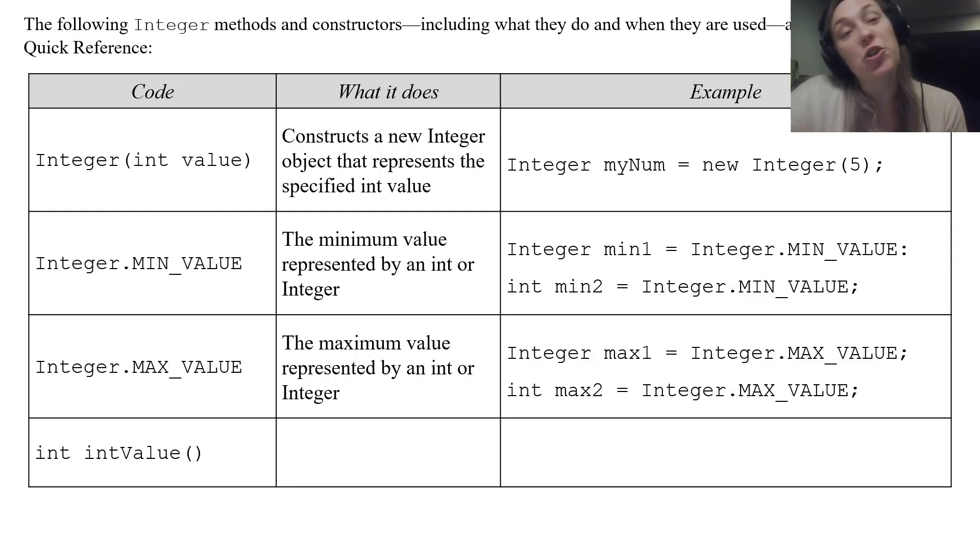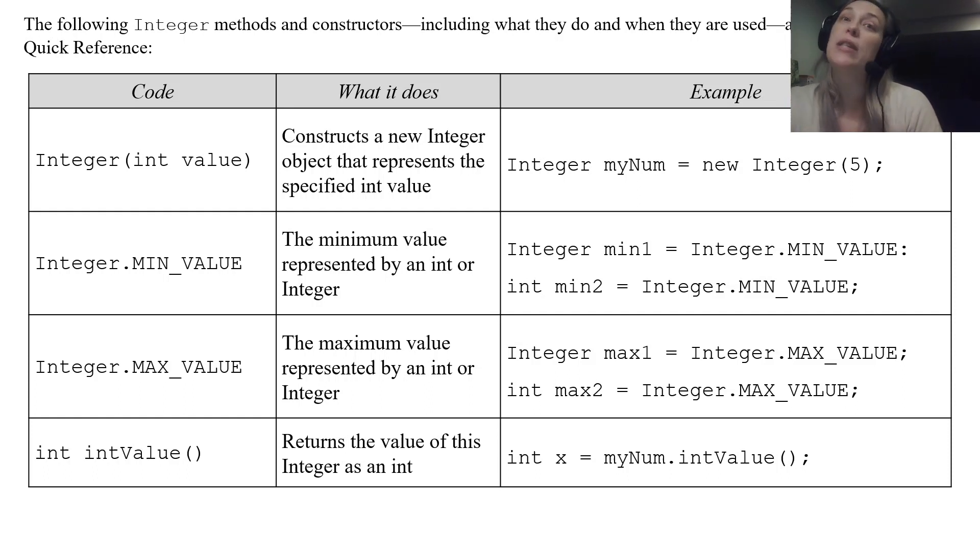And then the last one is actually a method that returns the value of the Integer as an int. So this would be like if you have an int object and you want to use that value but use it as a primitive data type. You would use myNum because remember myNum up here was constructed as an Integer object. And then you use that as your reference call myNum.intValue. That's the method in the object creating class that you would call. And that returns your value of myNum as an integer. So you'll have an integer value to capture it. So those are the four you have to know for the AP exam but again they're all on that formula sheet.